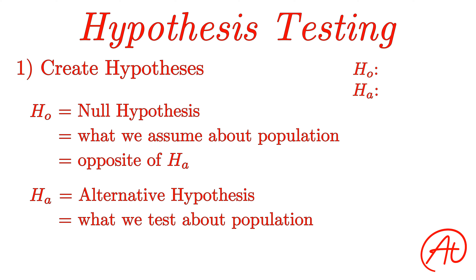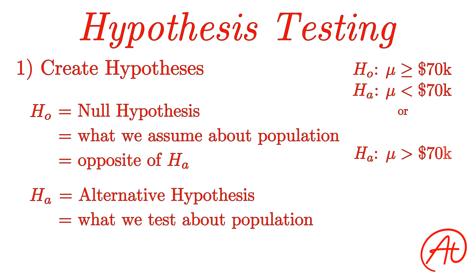For example, let's say you saw a report that said the mean income in the U.S. was $70,000, but you think it's actually less than that. Since you want to test whether the population mean income is less than $70,000, your alternative hypothesis is: mu is less than $70,000. And the null hypothesis is just the opposite: mu is greater than or equal to $70,000. There's also the scenario where you believe the true population mean is greater than $70,000, making the alternative hypothesis mu is greater than $70,000, and the null hypothesis mu is less than or equal to $70,000.